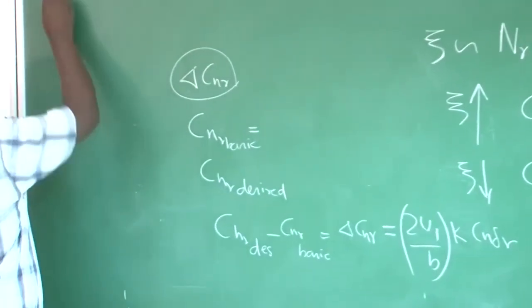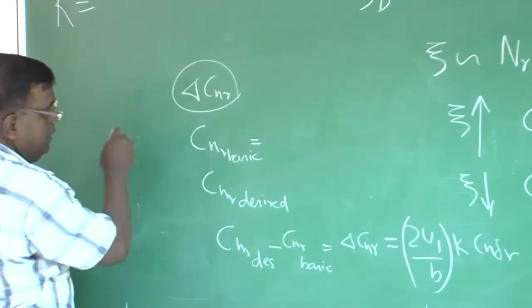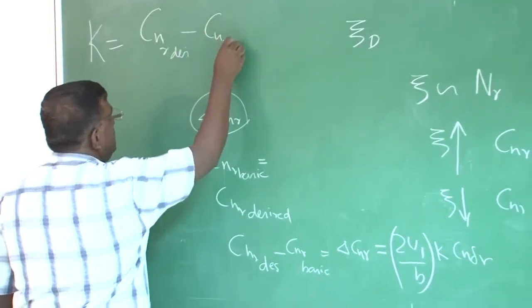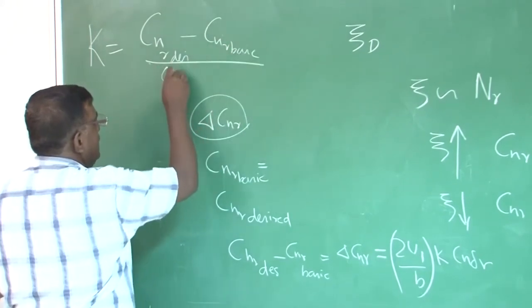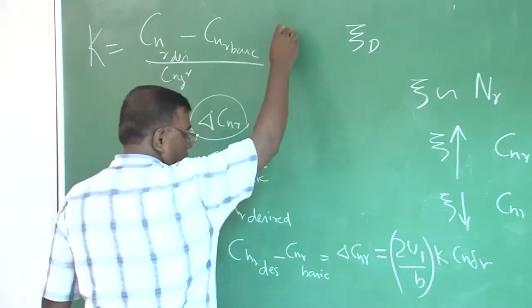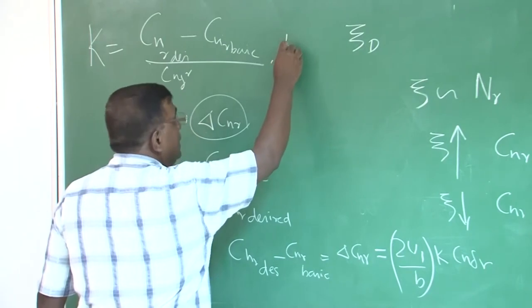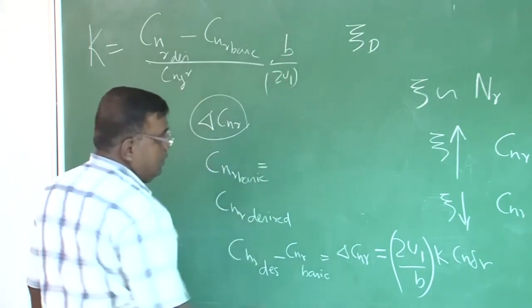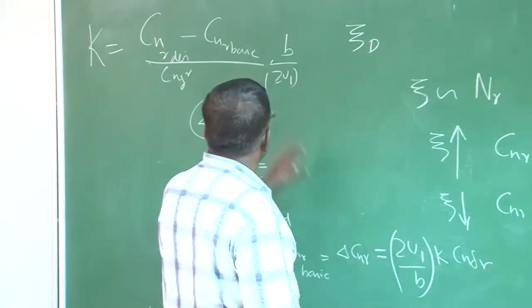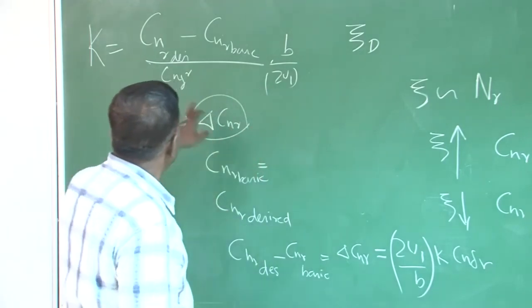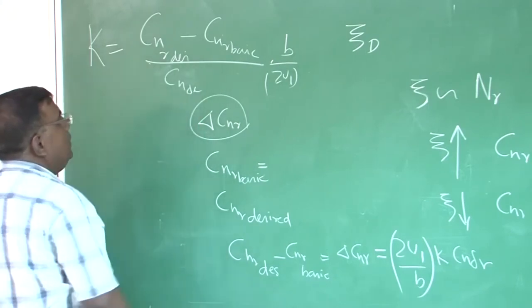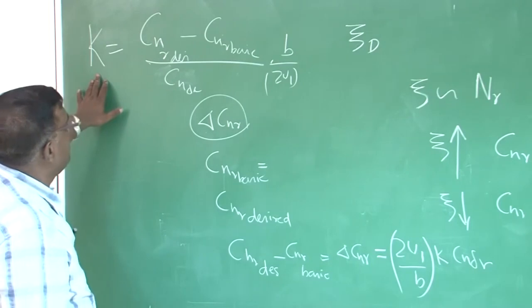So, you can find out k in this case will be c n r desired minus c n r basic divided by c n delta r into b b by 2 u 1. Am I correct? So, k will be equal to b by 2 u 1, please check yourself. So, this is c n delta r, this is k.